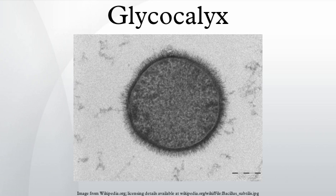A glycocalyx, literally meaning sugar coat, is a network of polysaccharides that project from cellular surfaces of bacteria, which classifies it as a universal surface component of a bacterial cell, found just outside the bacterium cell wall. A distinct, gelatinous glycocalyx is called a capsule, whereas an irregular, diffuse layer is called a slime layer. This coat is extremely hydrated and stains with ruthenium red. Bacteria growing in natural ecosystems, such as in soil, bovine intestines, or the human urinary tract, is surrounded by some sort of glycocalyx-enclosed microcolony. It serves to protect the bacterium from harmful phagocytes by creating capsules or allowing the bacterium to attach itself to inert surfaces, like teeth or rocks, via biofilms.